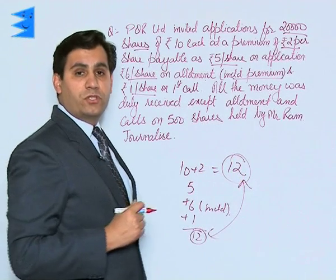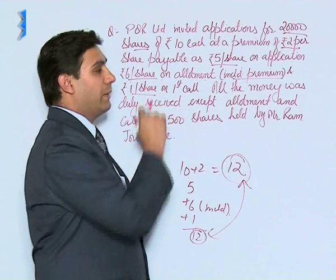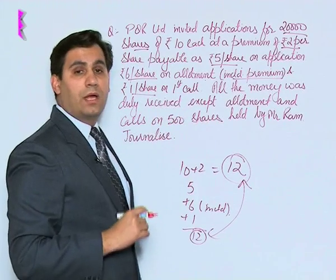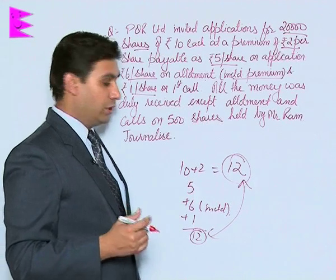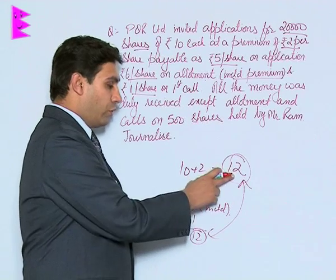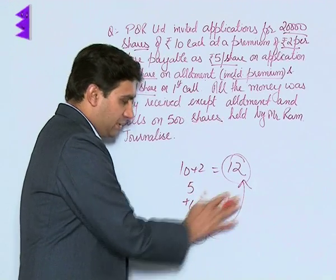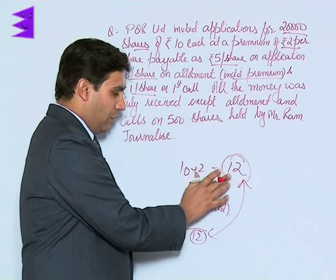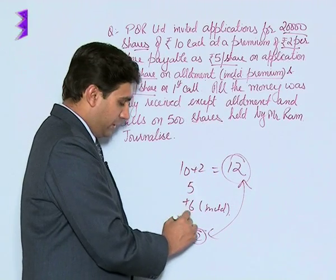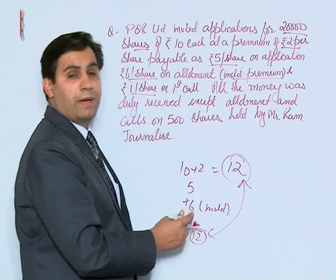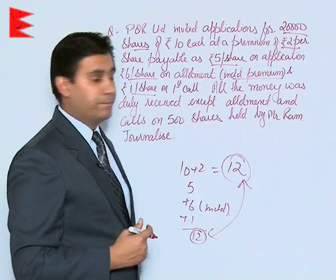Sometimes in certain questions, you might not be given the call money. The question might simply say 'the balance on the first call.' What you can do is: the issue price is Rs.12, subtract Rs.11 already called, and you get Rs.1 as the balance amount which belongs to the first call.